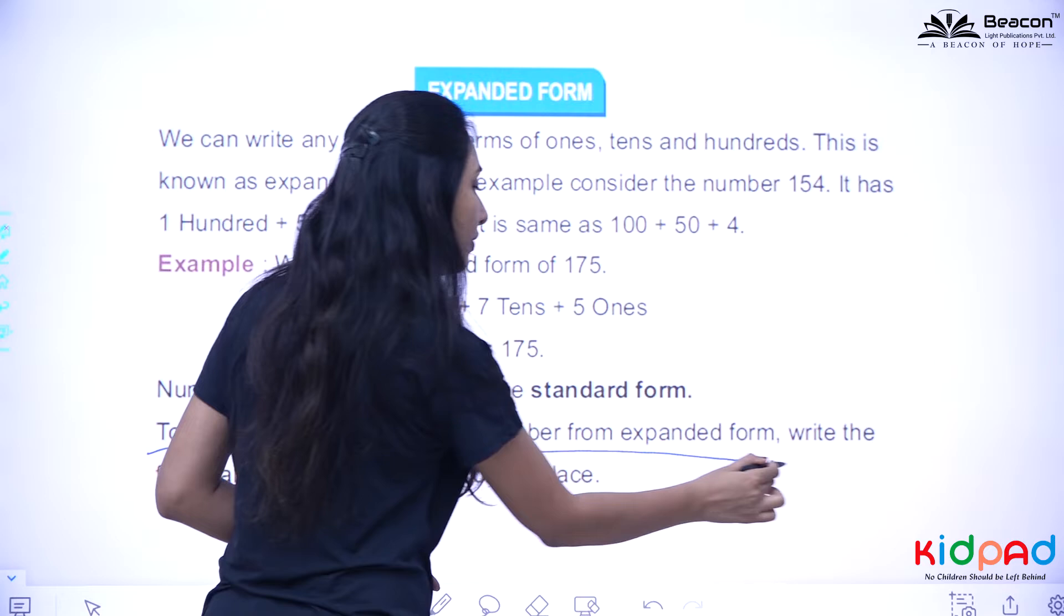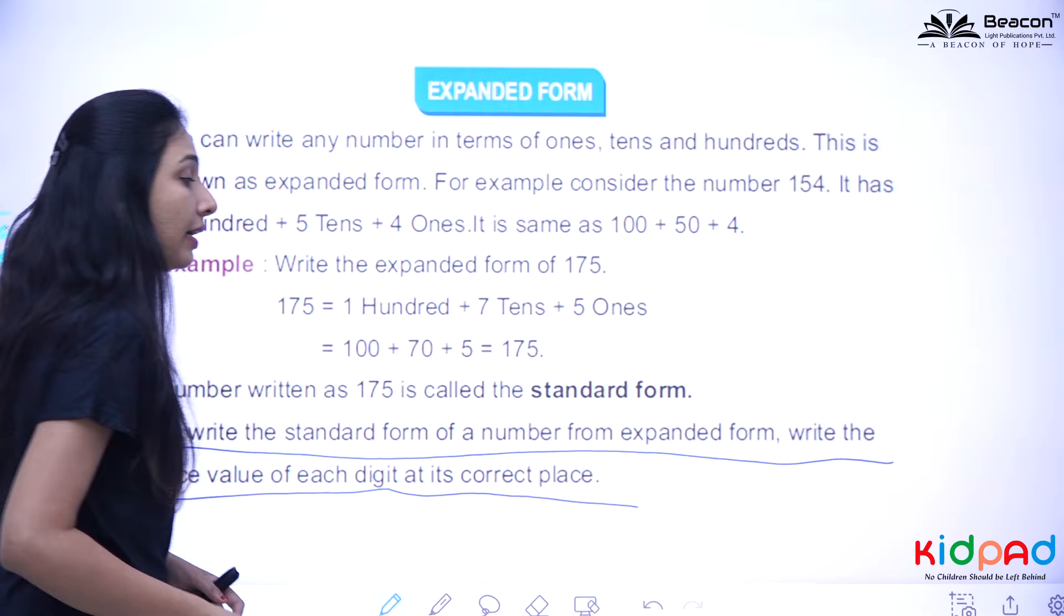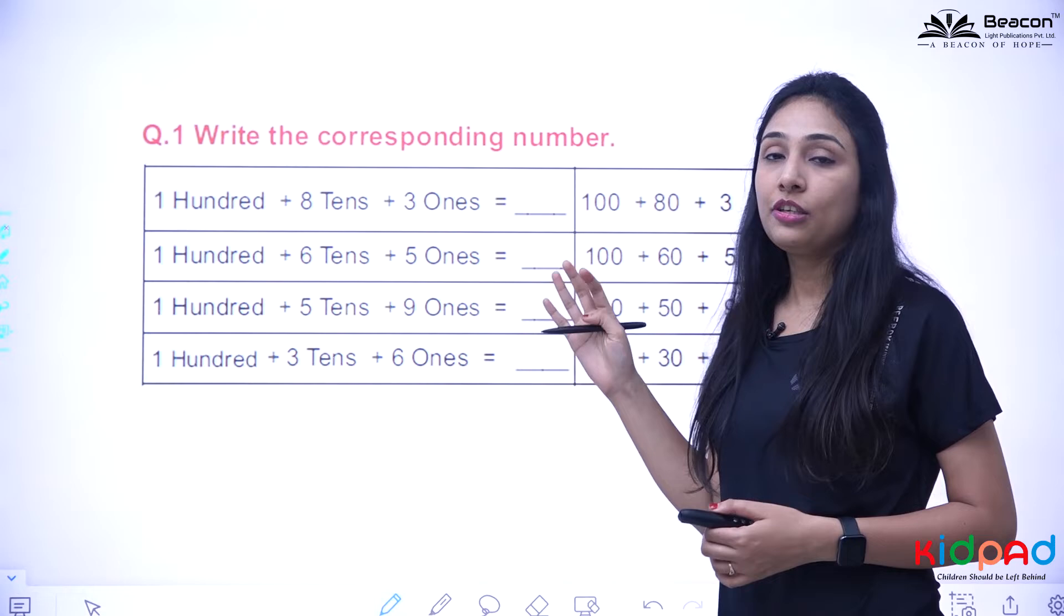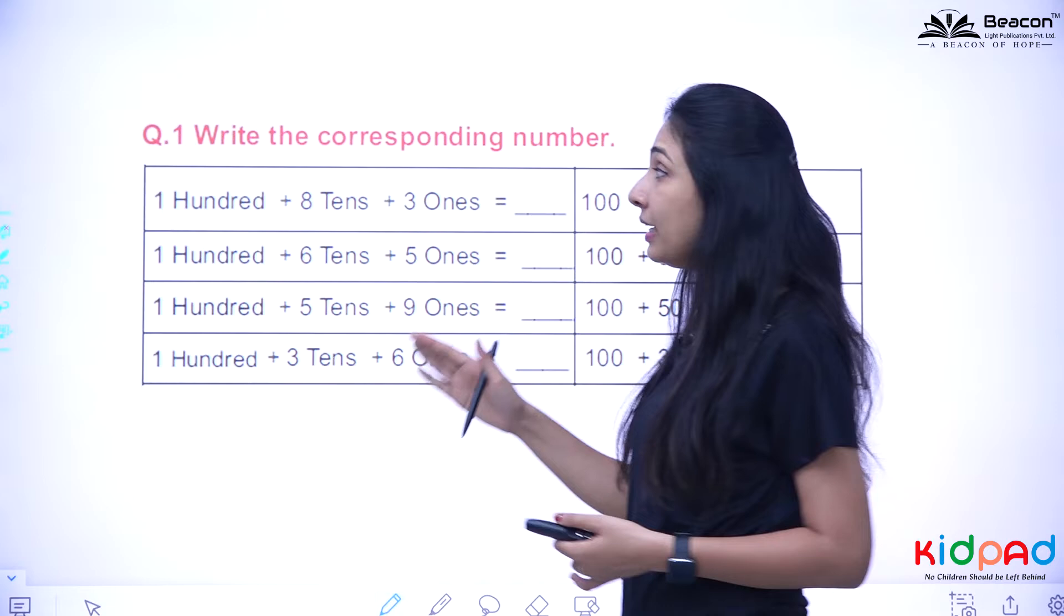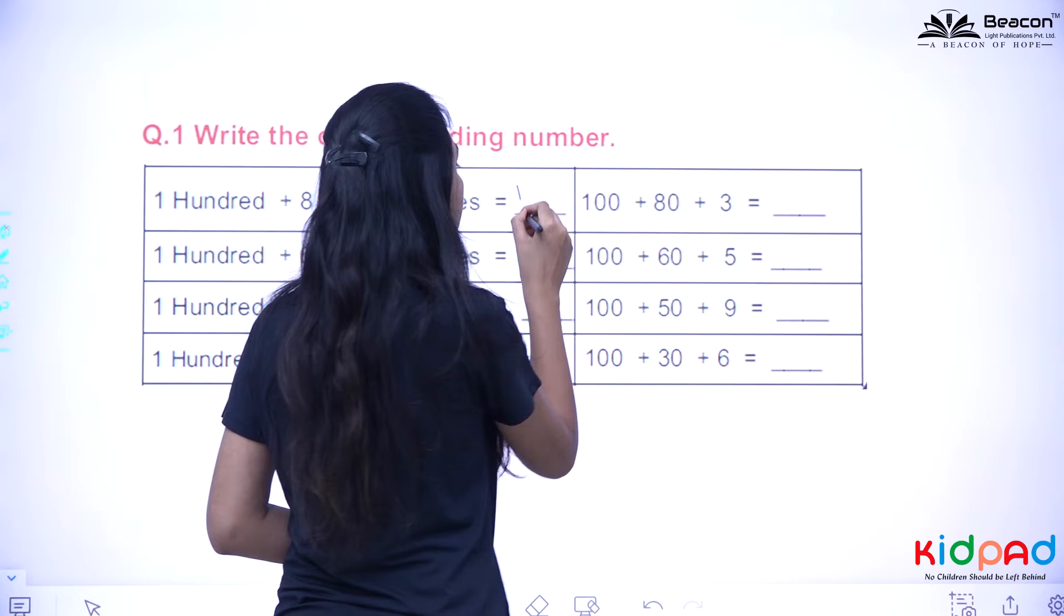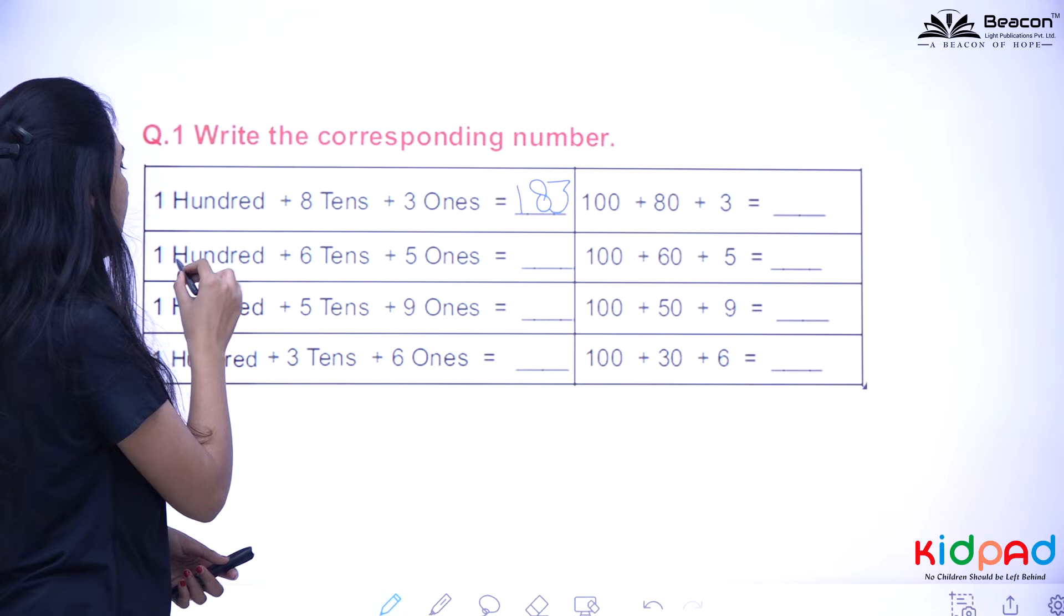To write the standard form of a number from expanded form, write the face value of each digit in its correct place. Now, you can see the questions in your book. Your first question is write the corresponding numbers. One hundred, eight tens, and three ones. This is one hundred plus eighty plus three. That will make it 183. Add it and you will get the number.